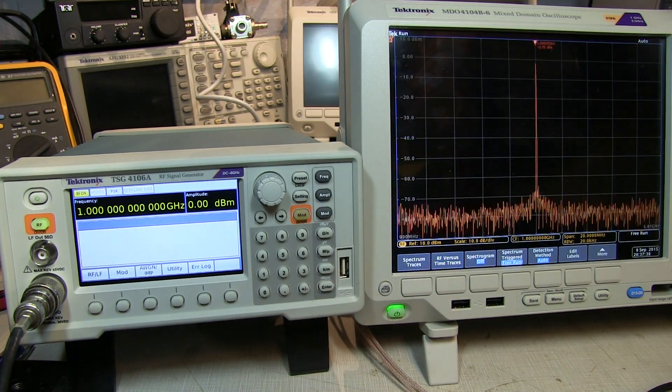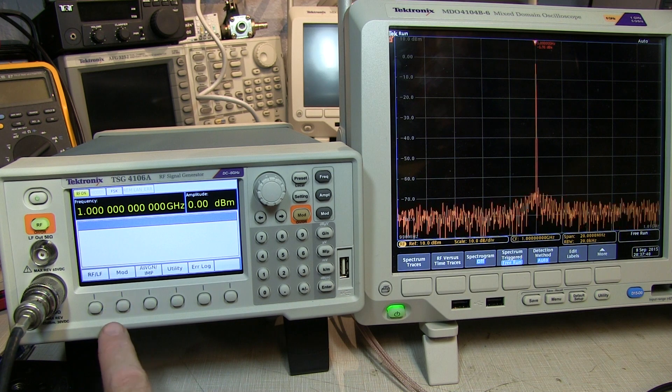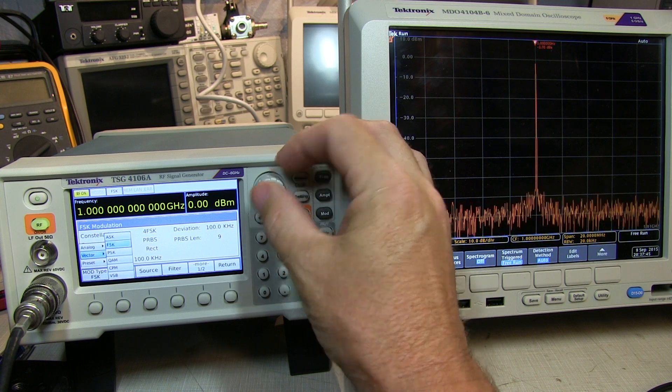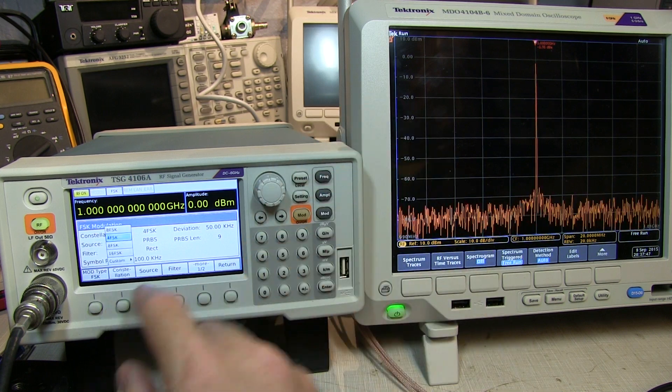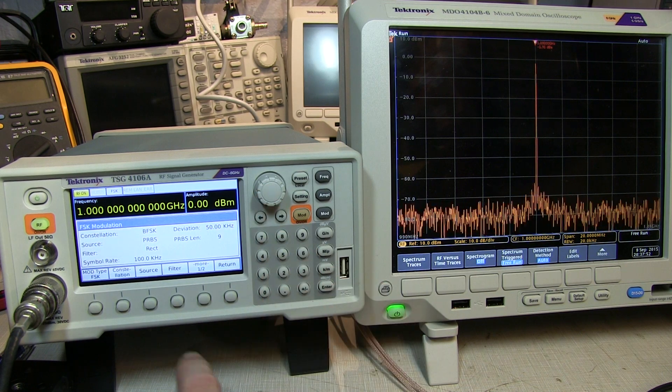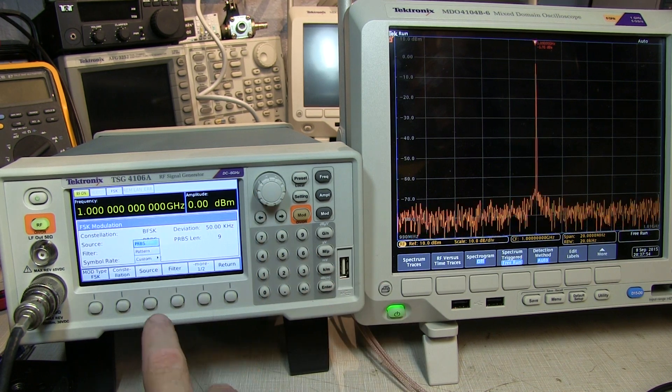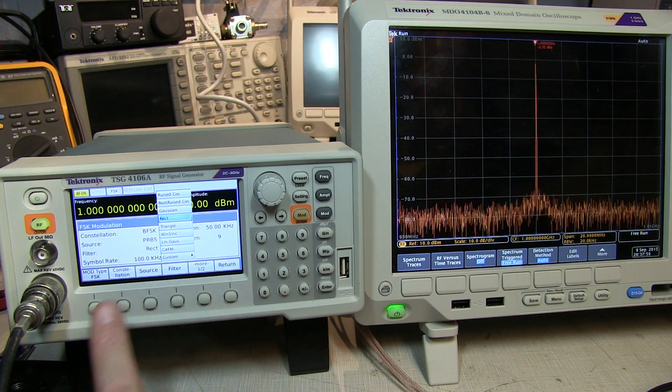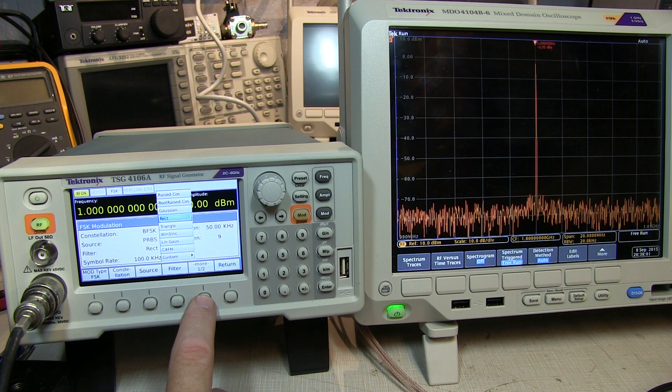All right, so let's play with some of the vector modulations. Let's start off with, say, a vector modulation. Let's pick, say, an FSK, and we'll do just a binary FSK, so it'll shift between two different frequencies. The source, we'll just use a PRBS, it's fine. We'll leave the filter as a rectangular filter, so it's easy to see the frequency snapping from one to the other.